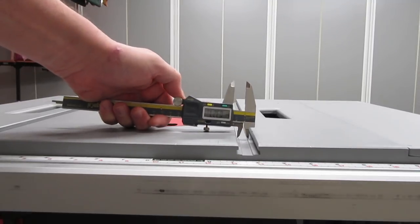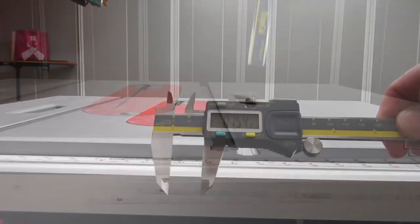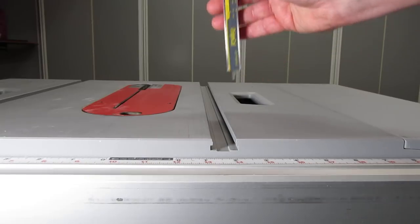With the inside jaws, they can measure the inside of things. With the depth bar, they can measure the depth of things.